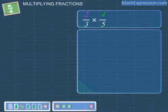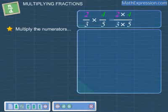For example, let's multiply 2 over 3 with 4 over 5. To do so, we just need to multiply the numerators together. Therefore, we multiply 2 with 4. This gives 8.